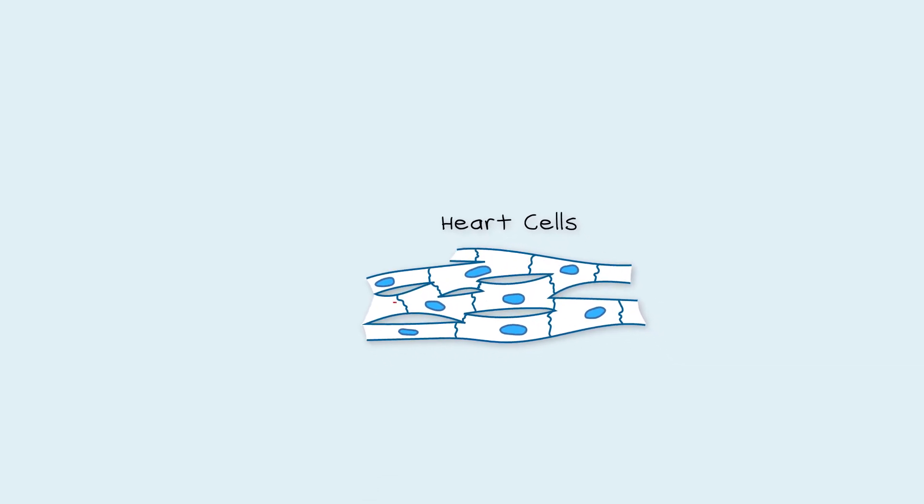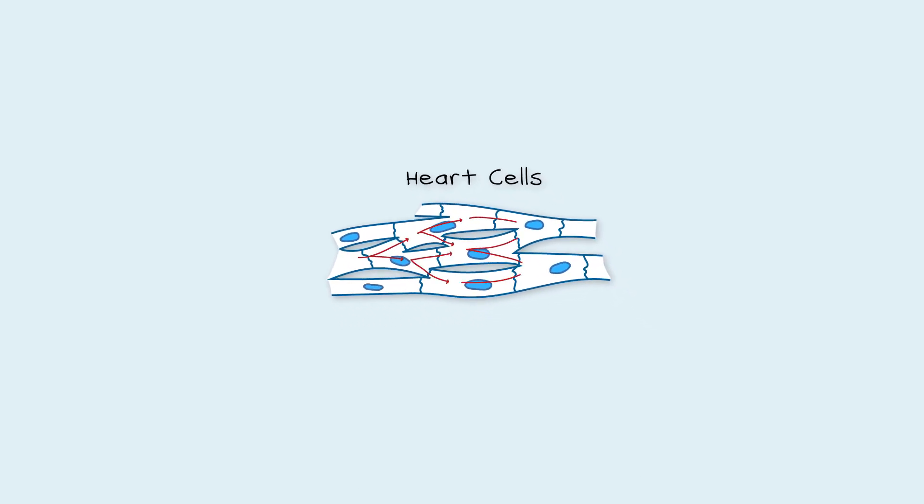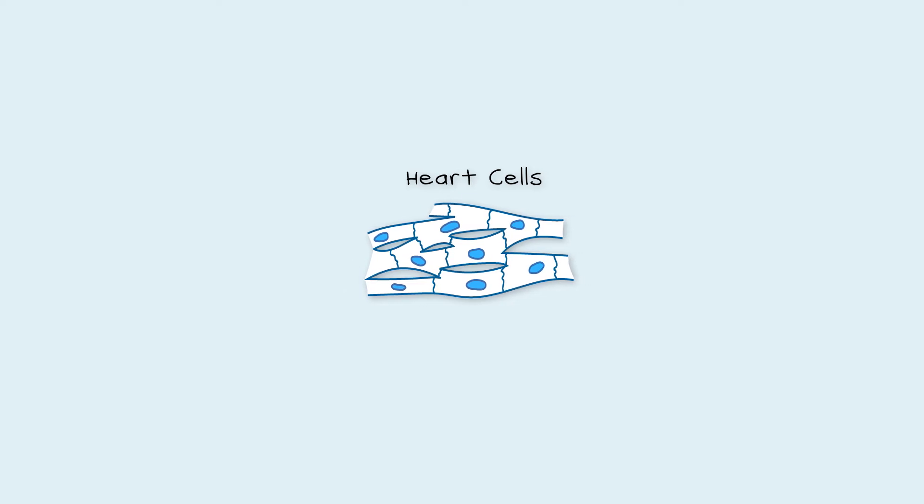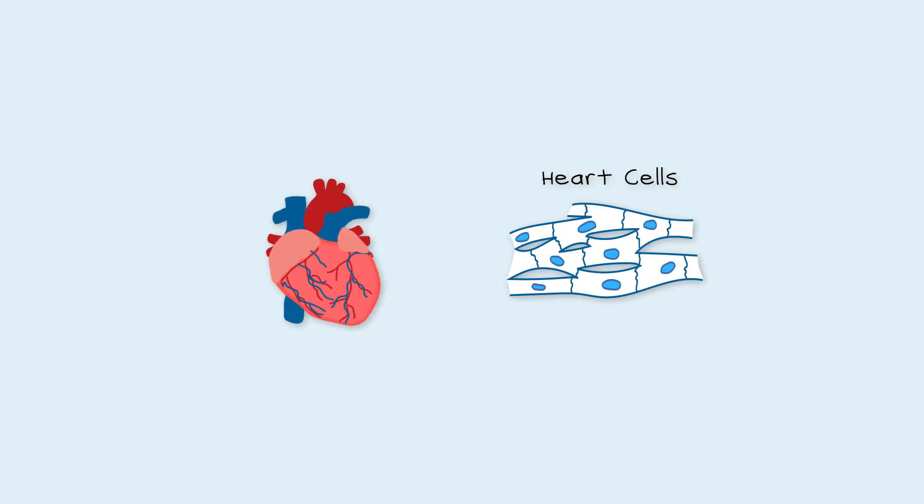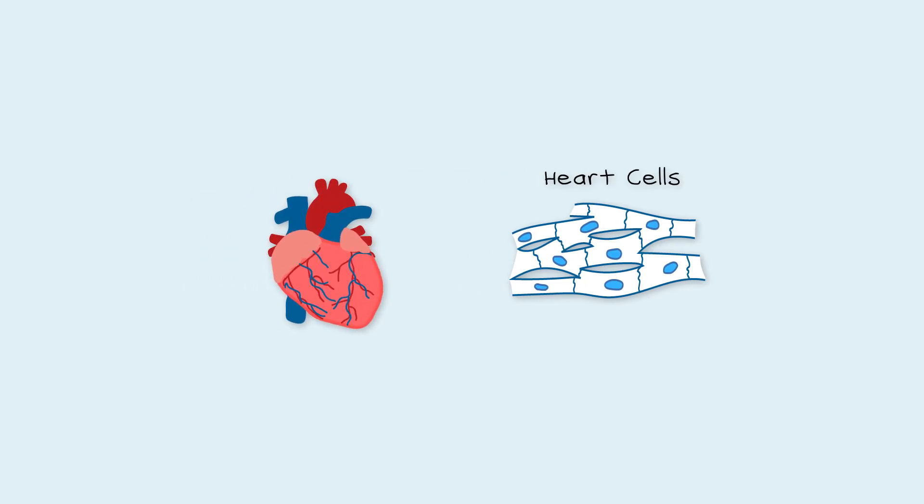Heart cells are joined together and branch out to form many connections. This is so an electrical impulse can spread extremely quickly and all the cells will become shorter at the same time, which is called a contraction. In the heart tissue, this shortening and lengthening of the cells is what forces blood in and out of the heart. This is how our heart beats.